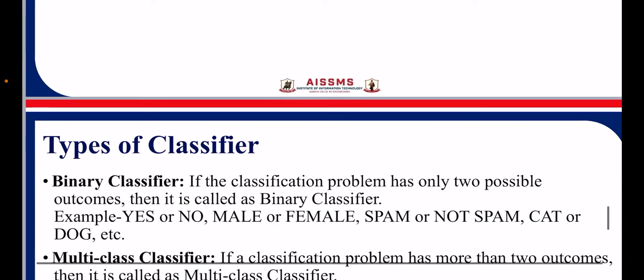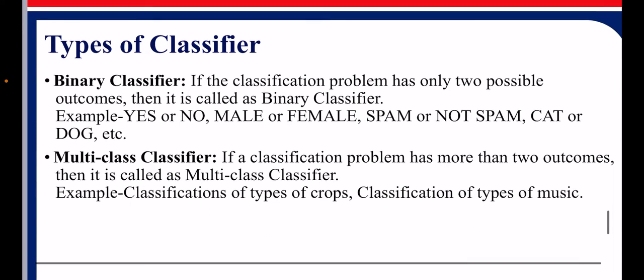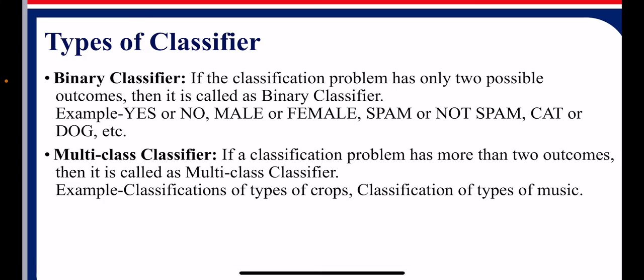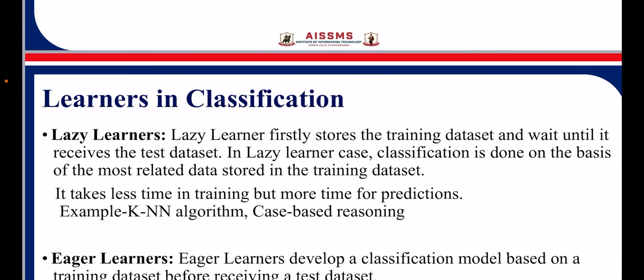There are two types of classifiers: binary classifier and multi-class classifier. When we are classifying our data into two possible outcomes, it is a binary classifier. And if a classification problem has more than two outcomes, then it is called a multi-class classifier.